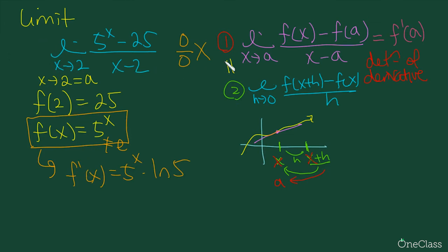Then we need to evaluate this where x is approaching 2. We need to insert 2 into where x is. So f prime of 2 is going to be wherever x is, we plug in 2. So 5 to the power of 2 times ln 5, which equals 25 times ln 5. That will be our evaluation of this limit expression.